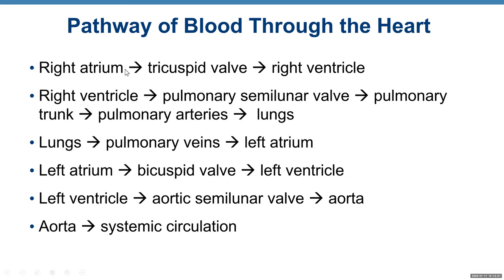The detailed pathway: right atrium → tricuspid valve → right ventricle → pulmonary valve → pulmonary trunk → pulmonary arteries → lungs (gas exchange: get rid of carbon dioxide, pick up oxygen) → pulmonary veins → left atrium → bicuspid valve → left ventricle → aortic valve → aorta → systemic circulation.